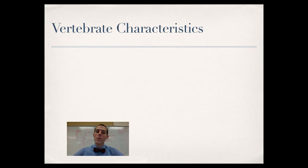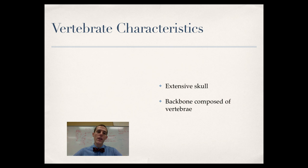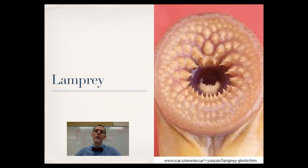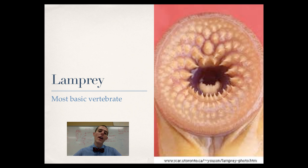Moving forward, we get to the vertebrates. Hagfish have no vertebral column. In vertebrates, we see an extensive skull usually surrounding a brain, and a backbone composed of vertebrae that wraps around the spinal cord — that dorsal hollow nerve cord is now surrounded by a vertebral backbone rather than being naked. And we have a complex nervous system. The most basic vertebrate is the lamprey, which looks almost exactly like a hagfish except for that round mouth full of teeth, with a rudimentary skull and vertebrae surrounding its nerve cord.